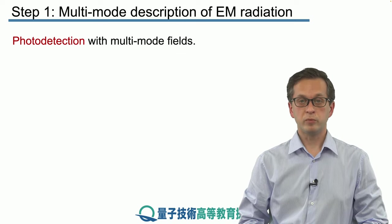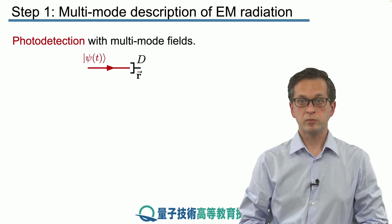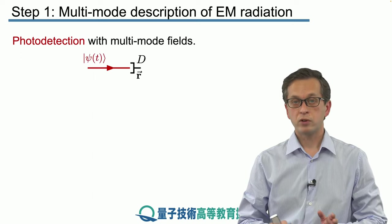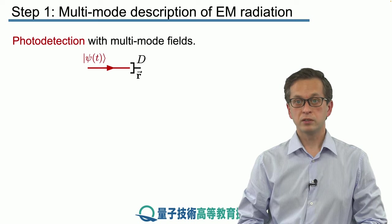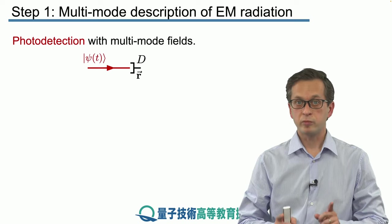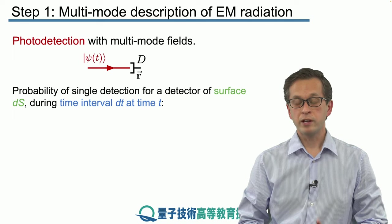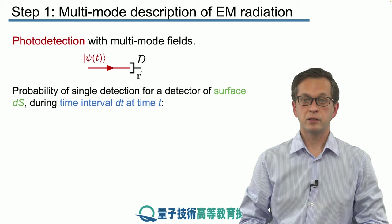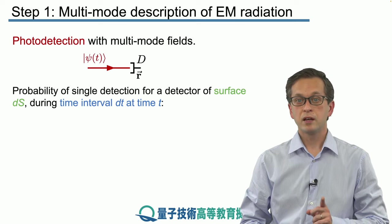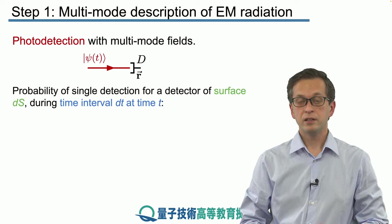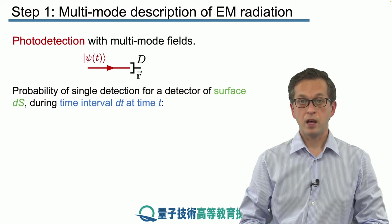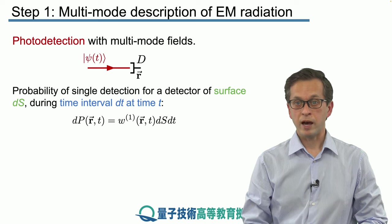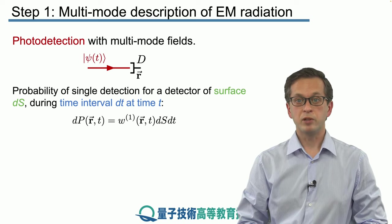So how do we do it in the multimode case? It's the same logic as in the single-mode case. We've got our detector placed at position r, and we've got some state of the radiation field psi t. This time it's a multimode state. We are interested in calculating the probability of a single detection for a detector of surface area ds during the time interval dt at time t. And we have seen how to compute that.